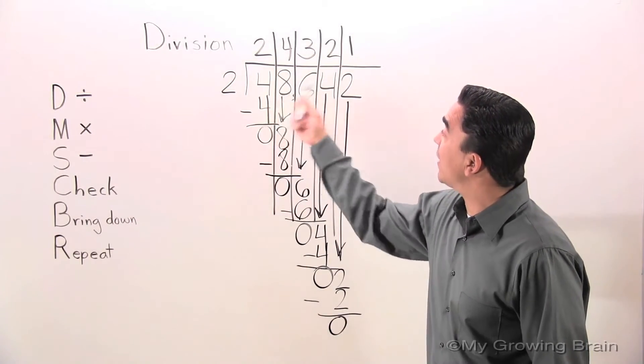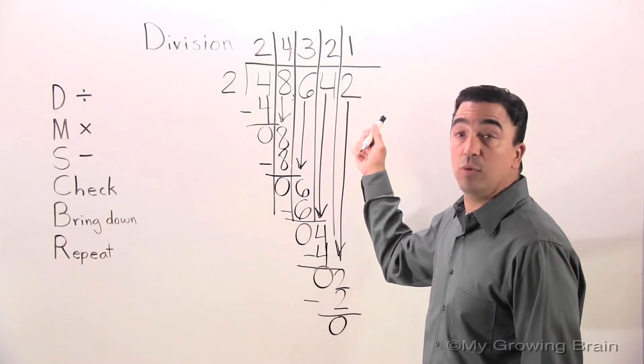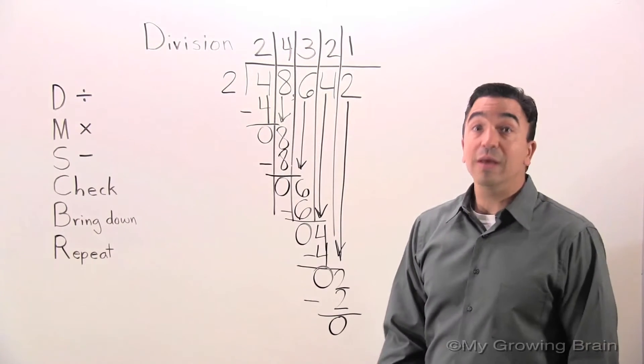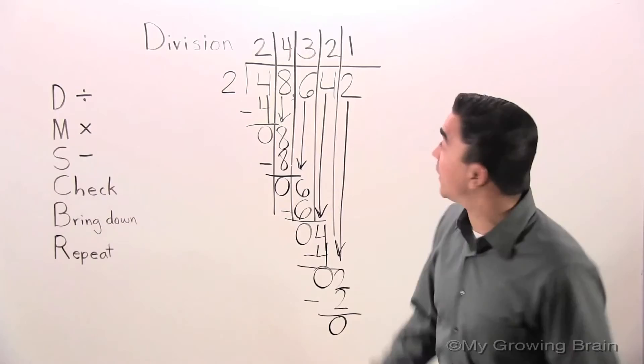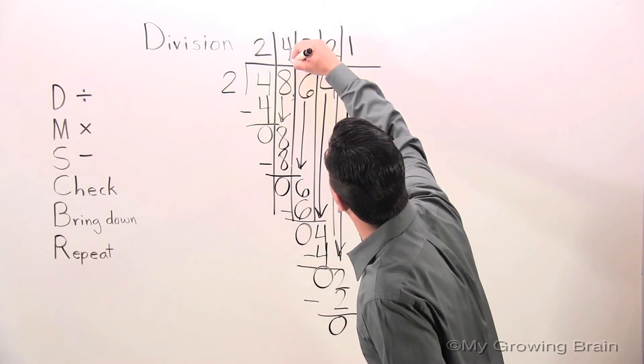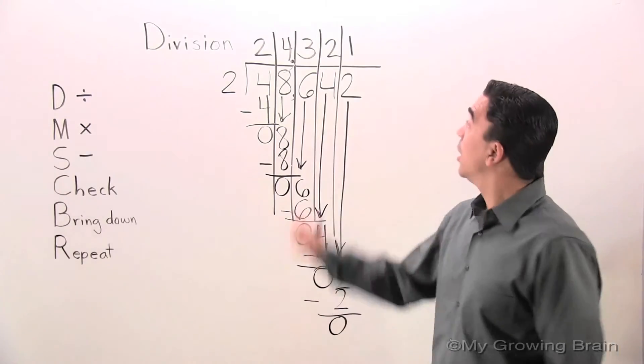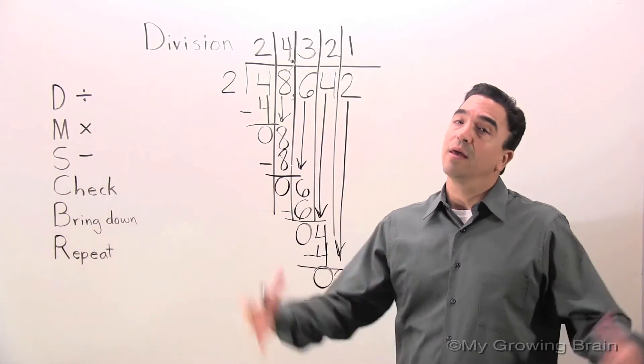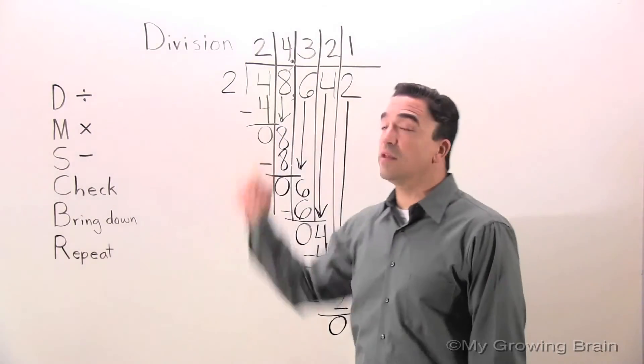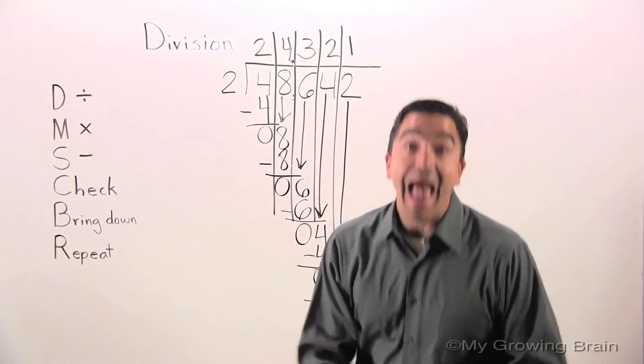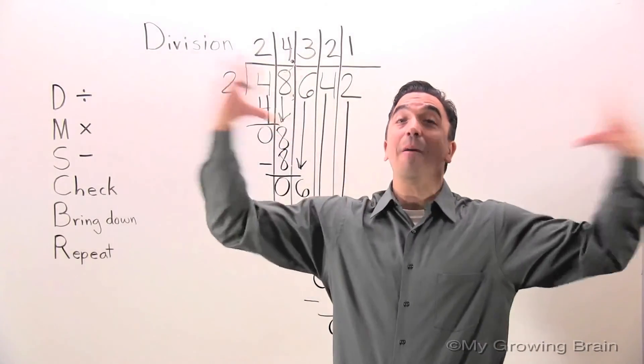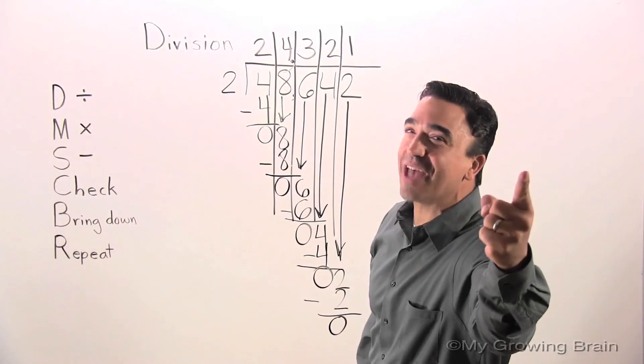48,642 divided by 2 equals a quotient of 24,321. This concludes our lesson on Division. Coach Mike at My Growing Brain. Challenge Yourself. Let's do this.